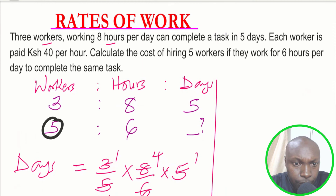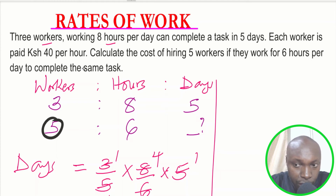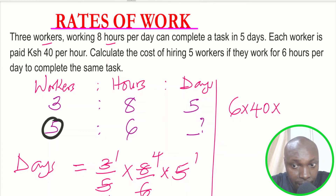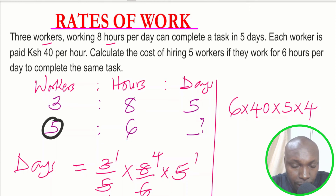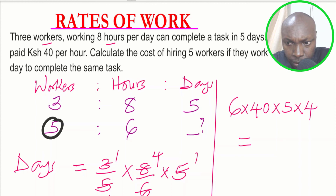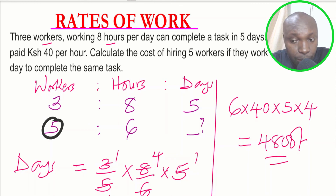Now we calculate the total cost. Each worker is paid 40 shillings per hour. Six hours per day means one worker earns six times 40 per day. There are five workers and they take four days, so the total cost is six multiplied by 40, multiplied by five, multiplied by four. Working this out gives four thousand eight hundred shillings. That is how you solve this question.